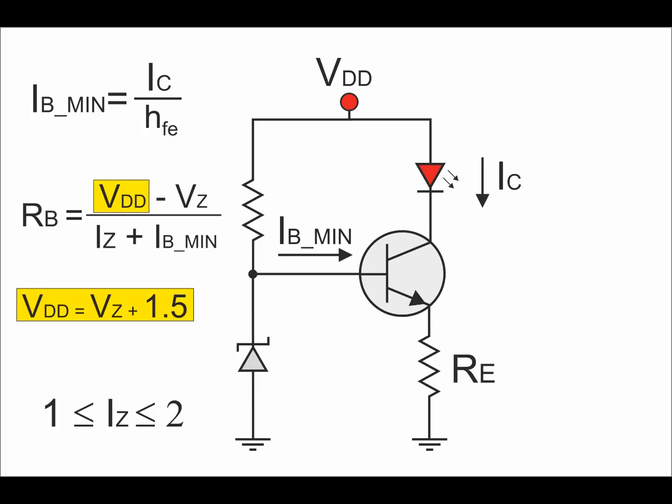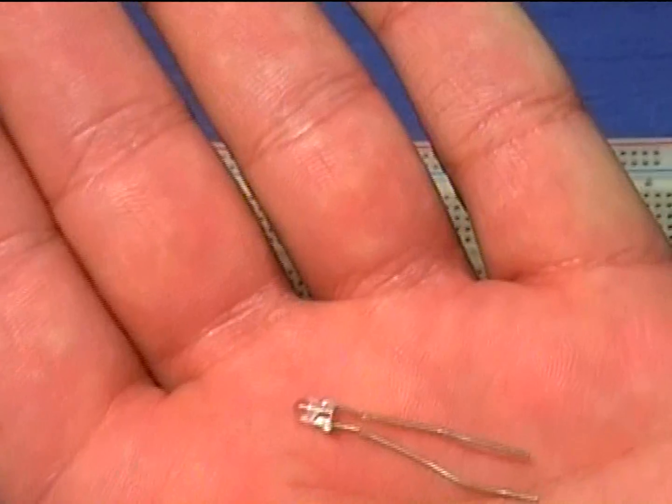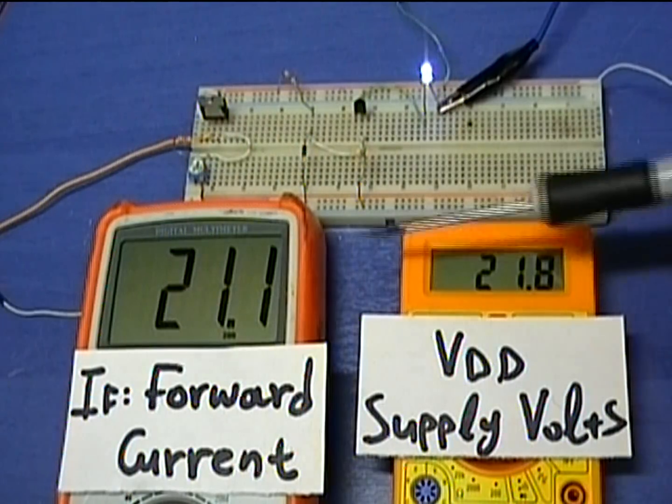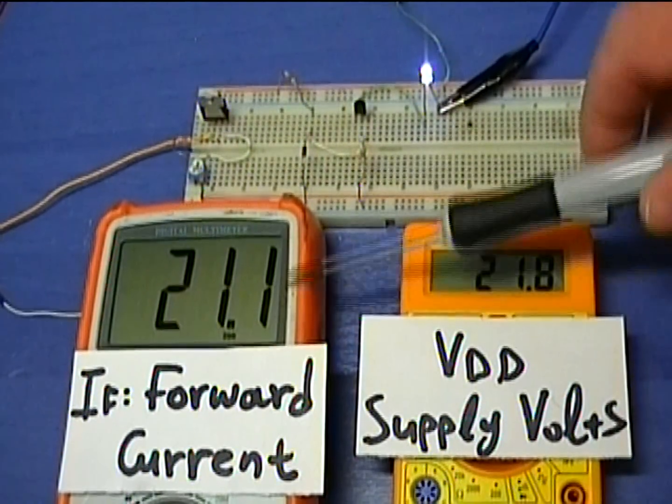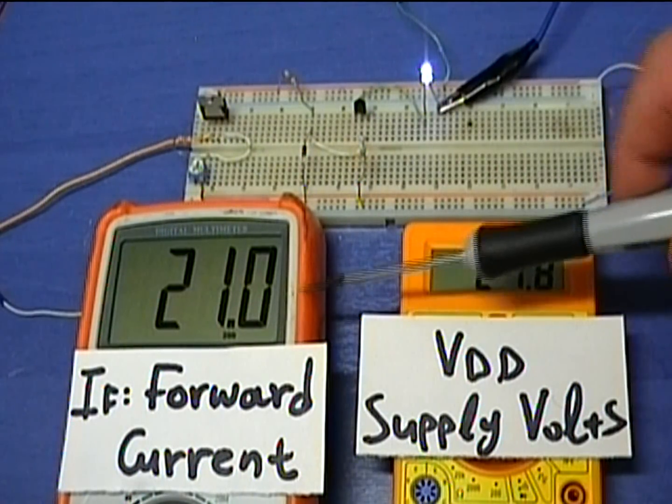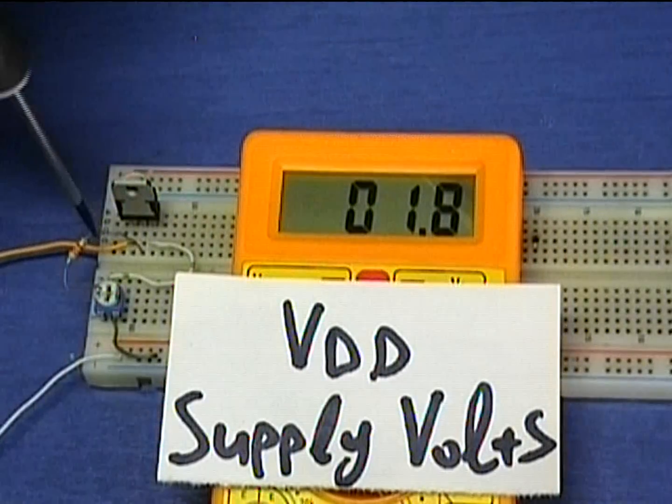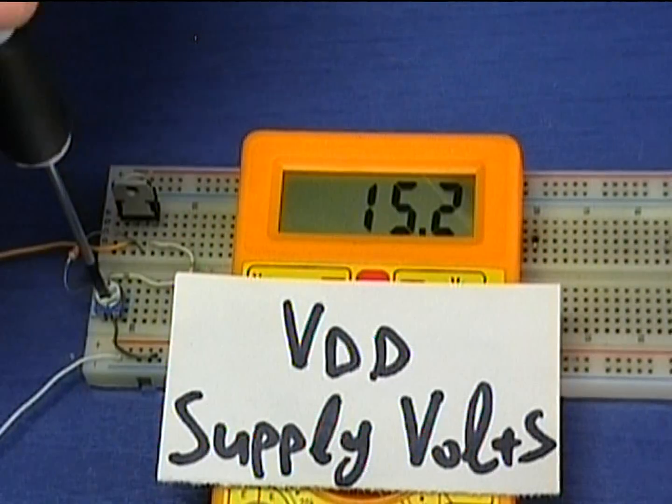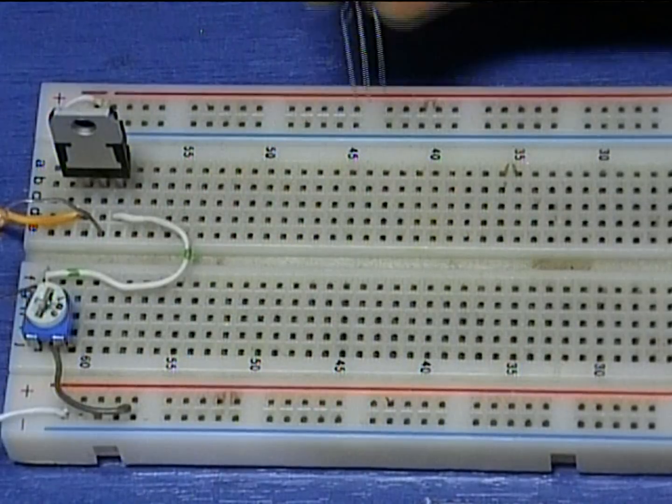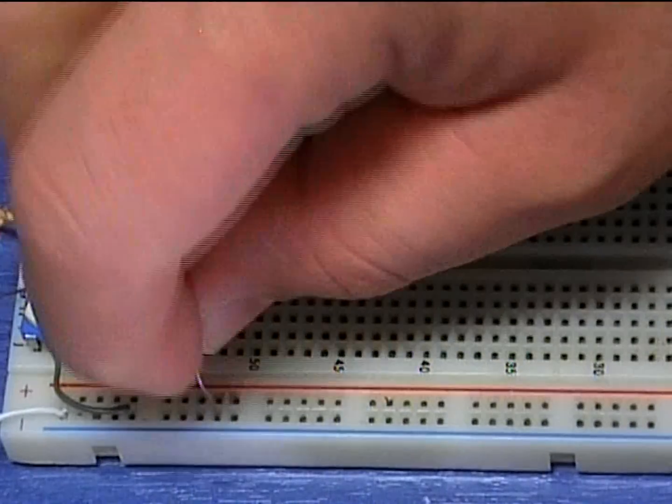Let's see an example. Suppose that we want to provide 20 mA constant current to this LED and we want to maintain this current stable, regardless of the power supply. I will be using a 5.1 volts Zener diode to achieve stable base voltage. The supply voltage will vary from 2 to 22 volts with the use of this LM317 voltage regulator. We will start building up the circuit from the transistor input, which contains the Zener diode and the base resistor.